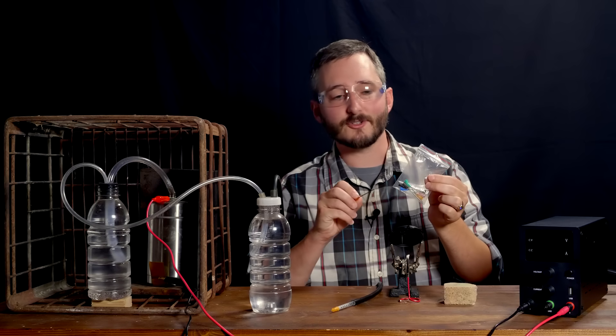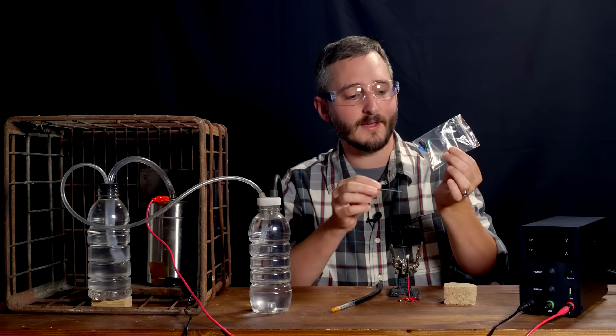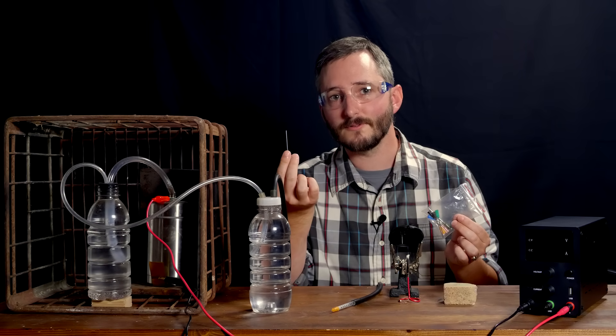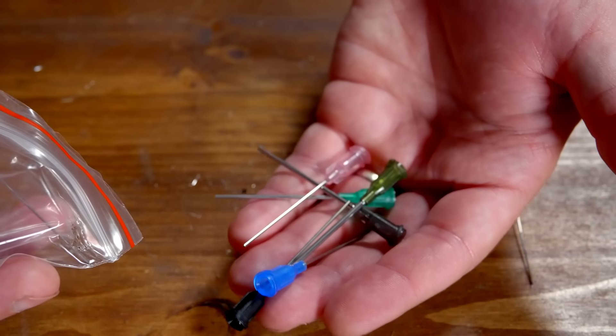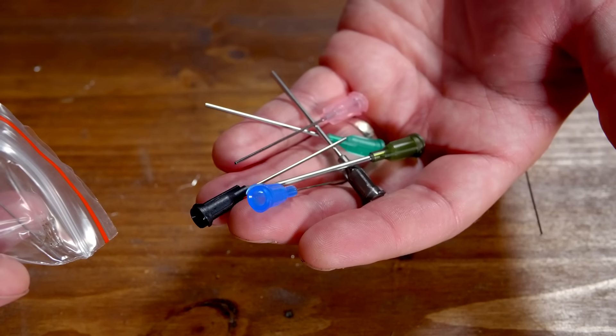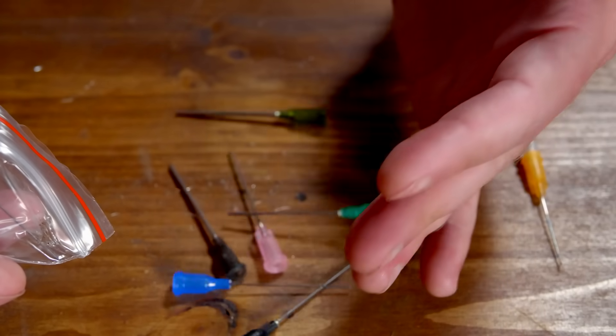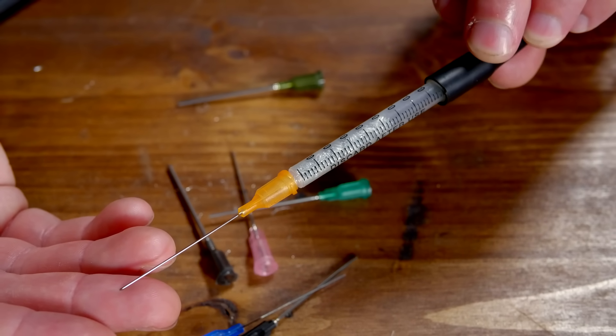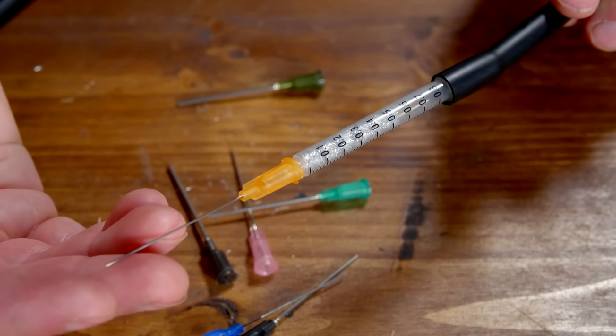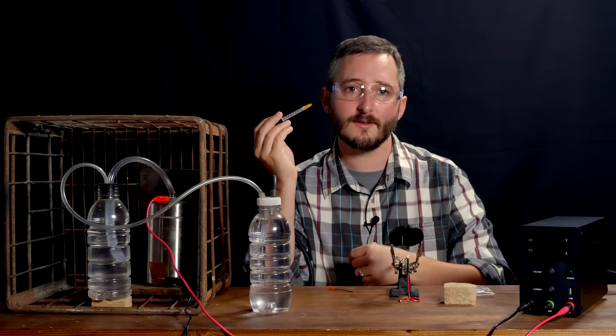I purchased a variety pack of blunt tip needles to test as my torch nozzles. These are not sharp, and so in practice they are simply a convenient way to purchase very small diameter stainless steel tubes. Starting with a variety was necessary because it takes some trial and error to find the correct nozzle size that allows the torch to work without flashback. After several tests, I found that a needle of 0.63 millimeters in diameter was just about perfect for the gas production of this particular system.